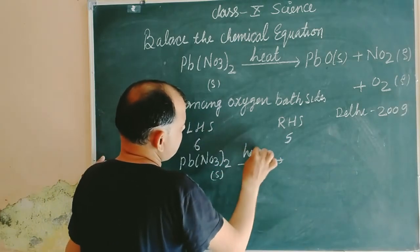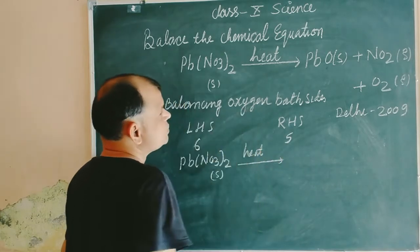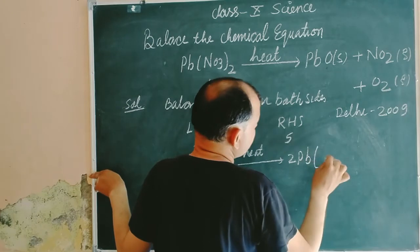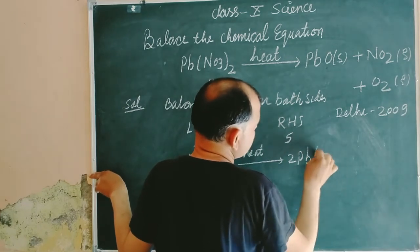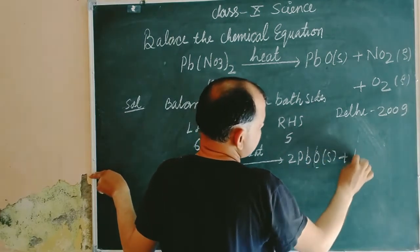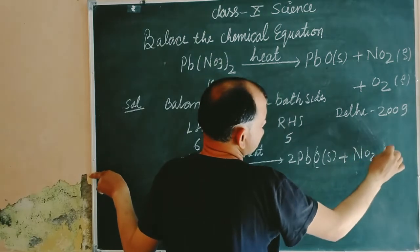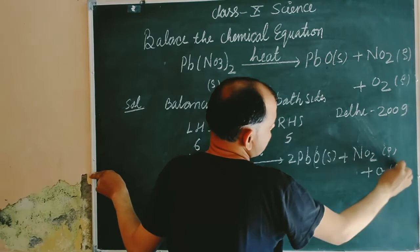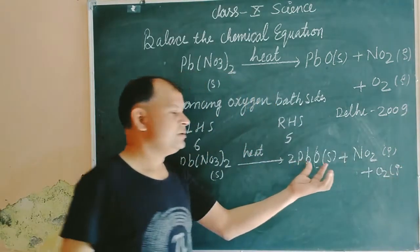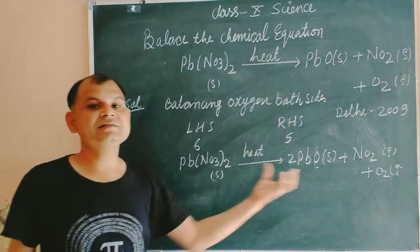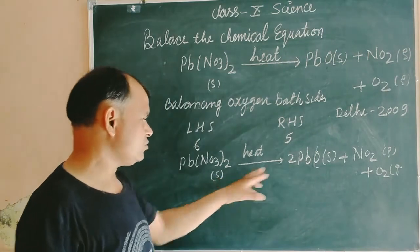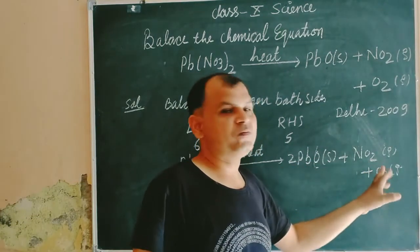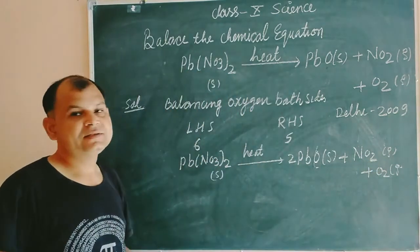heats, when we multiply this, we get 2 PbO, NO₂ plus O₂. The oxygen molecules is balanced from both sides. 2 plus 2, 4, 4 plus 2, 6. And here, 3 to 6.